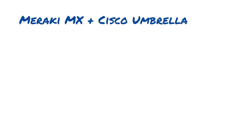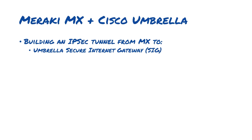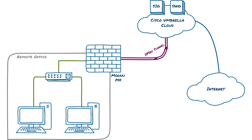In today's video, we're going to be taking a look at the integration between Cisco's Umbrella Secure Internet Gateway and Secure Web Gateway with a Meraki MX. Using the Umbrella Secure Internet Gateway, we'll be able to establish an IPsec tunnel from our MX, which might be located at a remote branch site, directly out to Cisco's Umbrella Cloud, where we can apply both web filtering and firewall policies to secure traffic going to the internet.